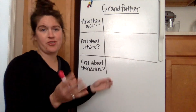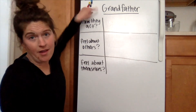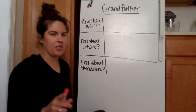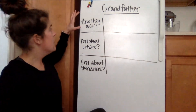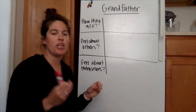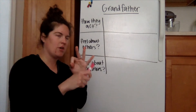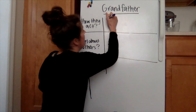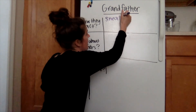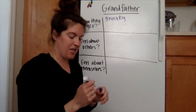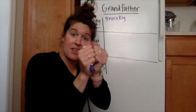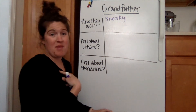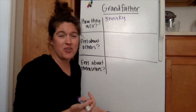I'm going to model this for you using Grandfather. He was one of the main characters we were introduced to in chapter one. The first question is: how does he act? I came across three different ways. The first one was sneaky — one of the first couple pages, he is coming downstairs, ripping the curtains together and pinning them so no one could see what they were doing. To me that comes across as pretty sneaky, like Grandfather's trying to hide something.